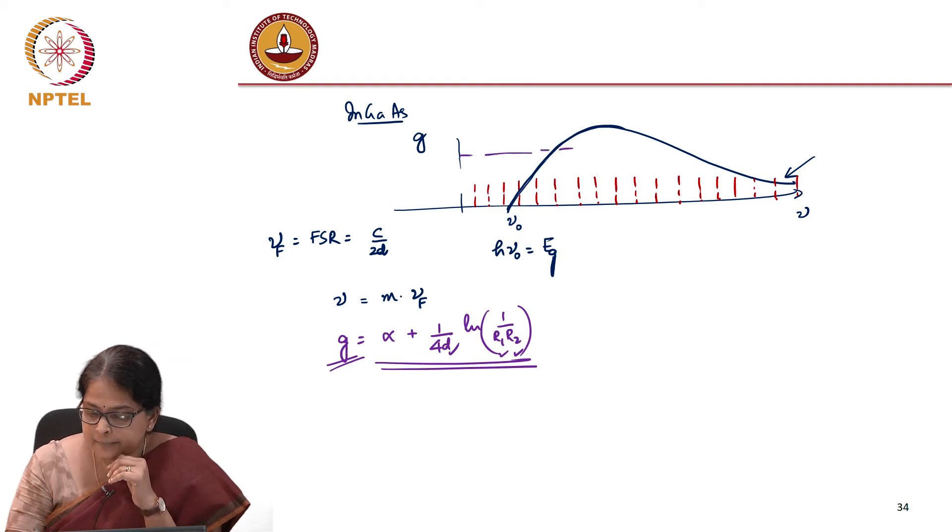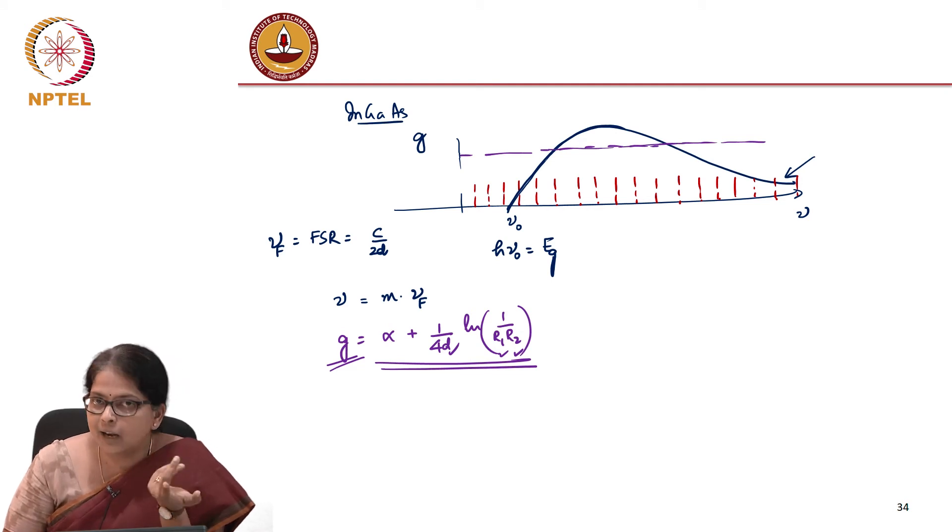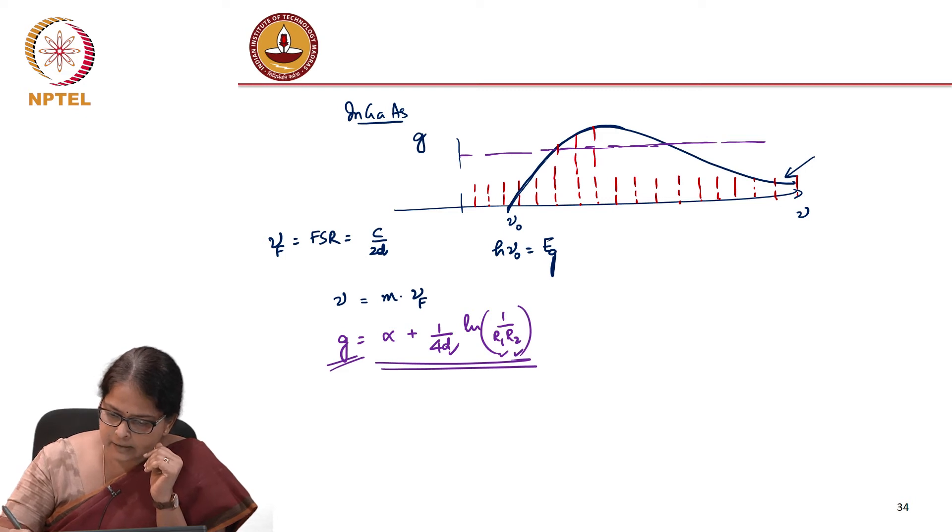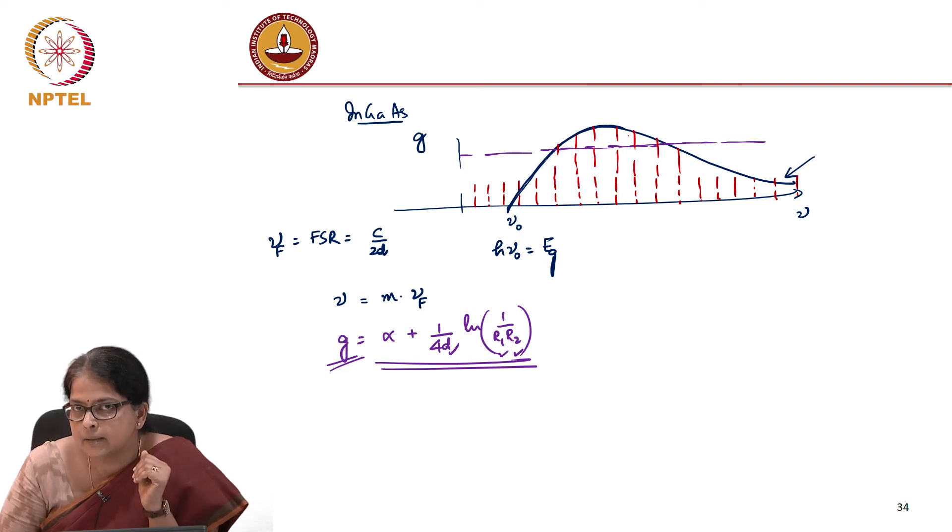I have a certain, I can draw a horizontal line corresponding to that. So only those frequencies which are above this are the allowed frequencies of the system. Only those frequencies which are supported by the cavity and only those frequencies which satisfy this condition are the allowed frequencies supported by this laser.